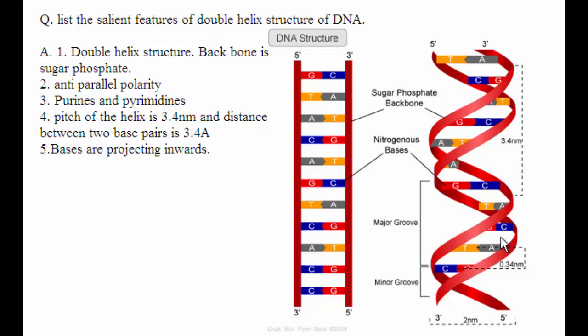The backbone of the DNA double helix is formed by sugars and phosphates, where the bases are projecting inwards. You can see here the base pairs are projecting inside the double helix. These are the salient features of the double helix structure of DNA.